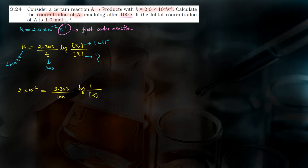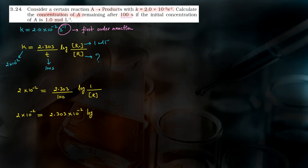So this becomes 2 into 10 to the power minus 2. And the 100 in the denominator also gives 10 to the power minus 2, so we can cancel them. Let's write it in one more step: 2 into 10 to the power minus 2 equals 2.303 into 10 to the power minus 2, times log of 1 by R.